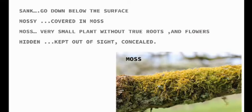So let's go to the word meanings. 'Sank' is the past form of 'sink', means to go down below the surface. 'Mossy' means covered in moss. And what is moss? It is a very small plant without roots and flowers — this plant doesn't flower. Here you can see the picture of a tree trunk covered with moss. And 'hidden' means kept out of sight, concealed.